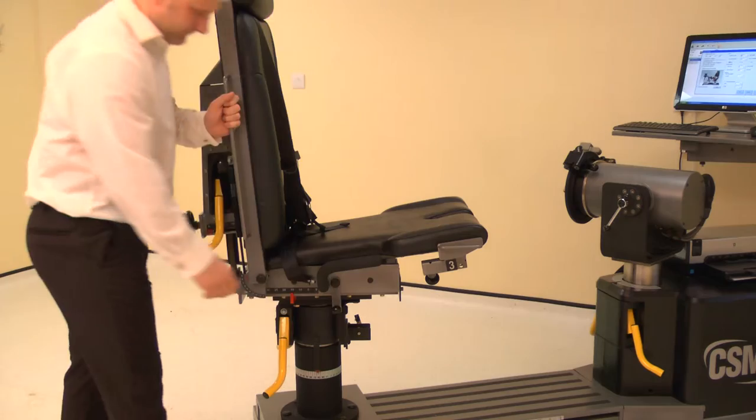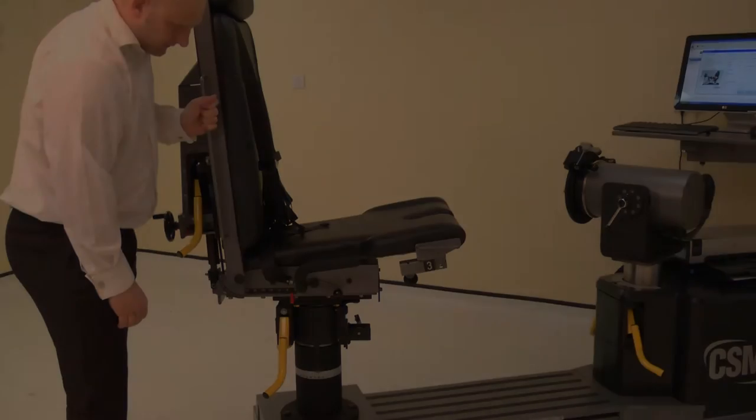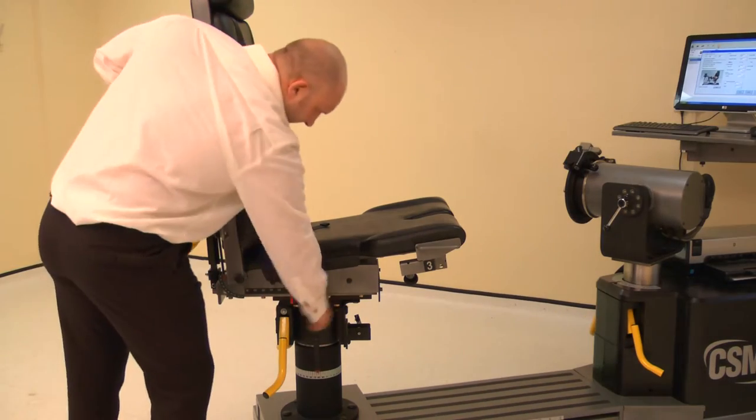The chair fore/aft is altered by raising either locking handle, then slide the chair bottom forwards or backwards. Adjust the chair fore/aft to position 25. Lower the locking handle to secure.